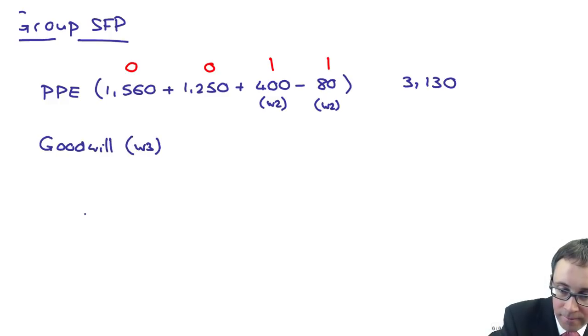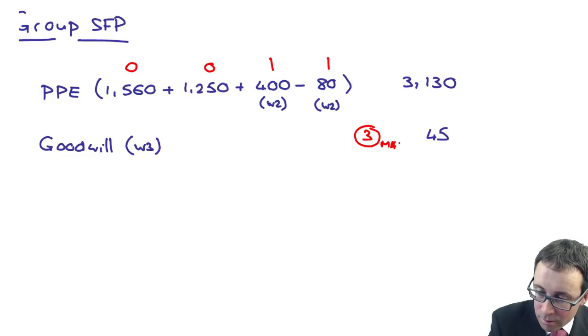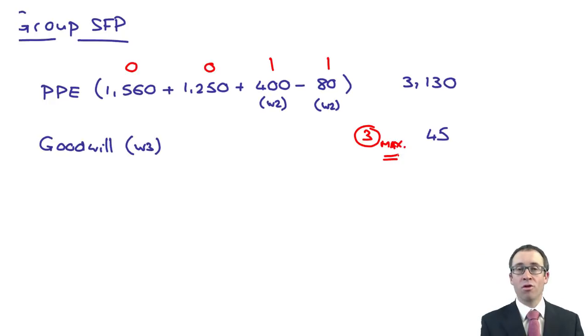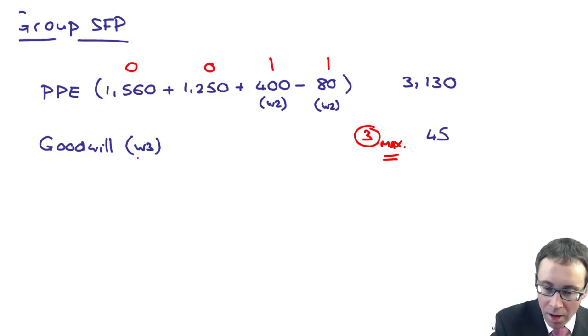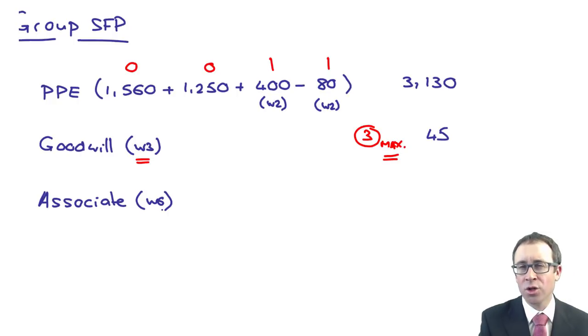Goodwill, that's working number three. So goodwill is 45. In total, that in this instance will be three marks maximum. So if you've got 45, the marker goes tick and gives you the three marks. If not, the marker will go and look at your answer. There are three lines and potentially one, one, one. So make sure to help the marker out to give you every chance of passing, reference your numbers back to your workings. We've then got the associate. So the associate from working six was 205. And then you could work out your total non-current assets. Don't bother within the exam.